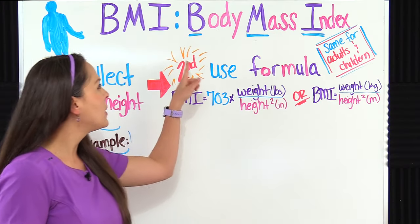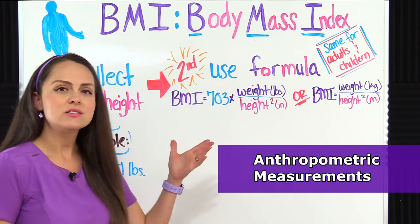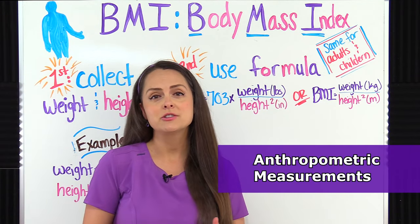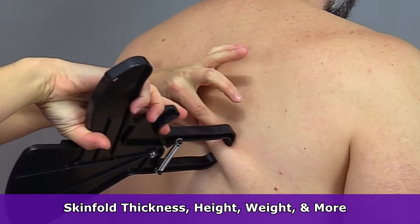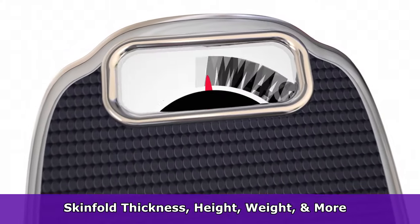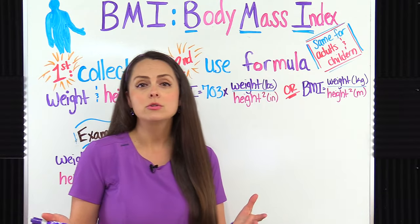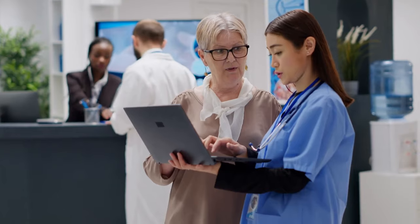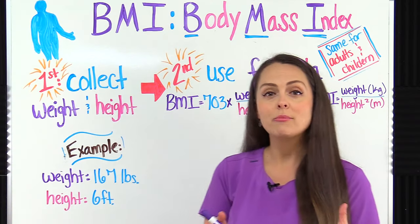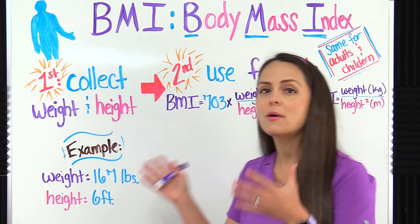BMI stands for Body Mass Index and this is one of the anthropometric measurements that we collect during a health assessment along with other measurements such as skinfold thickness, height, weight, and so on. BMI scores are really helpful because they allow us to screen patients for potential health problems. In this video I'm going to show you how to calculate this number manually.